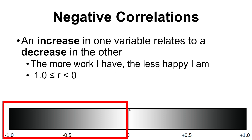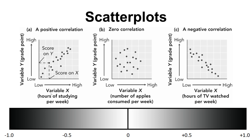Negative correlations are the other side of our number line — R is below 0 all the way to our negative limit of minus 1.0. An increase in one of our variables relates to a decrease in the other — a mismatch. For example: the more work I have, the less happy I am. It could be that working makes you unhappy, or that being unhappy makes you do more work.